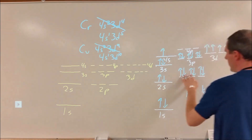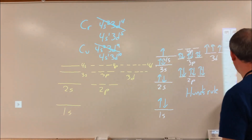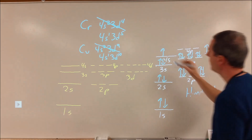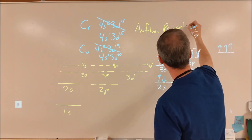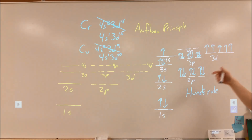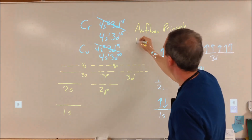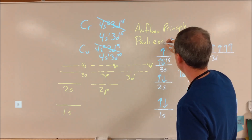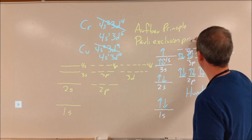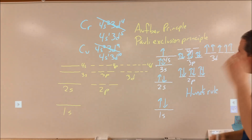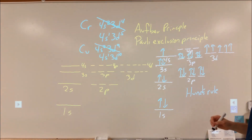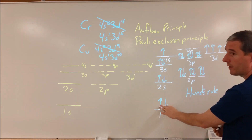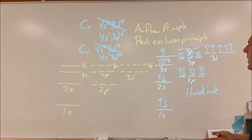The order I fill these in is lowest energy first — that's called the Aufbau principle, which states we start filling at 1s and work through 2s, 2p, 3s, and so on. The other rule that comes up very frequently is the Pauli exclusion principle. The physics way of stating it: no two electrons in an atom can have the same four quantum numbers n, l, m, and s. The chemistry way: you can only have two electrons per orbital, and if you do, they must have opposing spins.